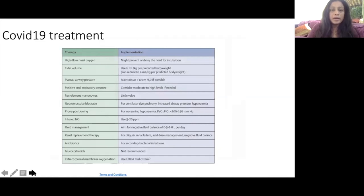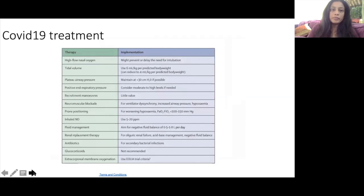From the Lancet, they recommend high-flow nasal oxygen; if this doesn't work, they intubate. Tidal volumes are 6 ml per kg predicted body weight, reducible to 4 ml per kg. Peak plateau airway pressure should be maintained at less than 30 cm. PEEP can be at moderate to high levels if needed, though there is some controversy about using lower PEEP. Other ICU measures include neuromuscular blockade, prone positioning, and inhaled nitrous oxide. Aim for a negative fluid balance of 0.5 to 1 liter per day; sometimes dialysis is needed.